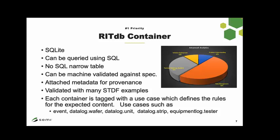Each container is tagged with a use case that defines the rules for expected content. Use cases include events, datalog.wafer (probe), datalog.unit (singulated unit), datalog.strip (final test in strip form), and equipmentlog.tester, which describes the tester's hardware and software contents at the time the equipment log is generated. It's more static — it's the tester itself, not the load board stack.